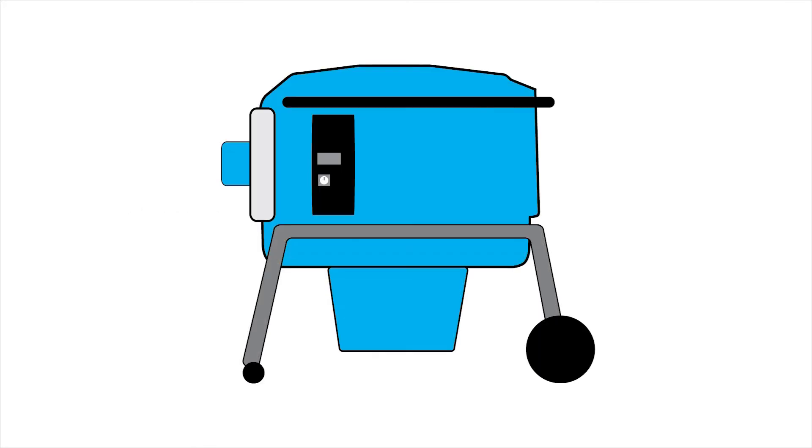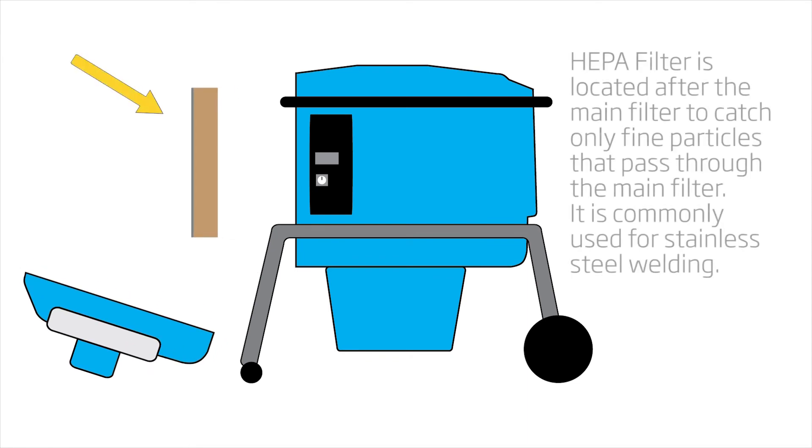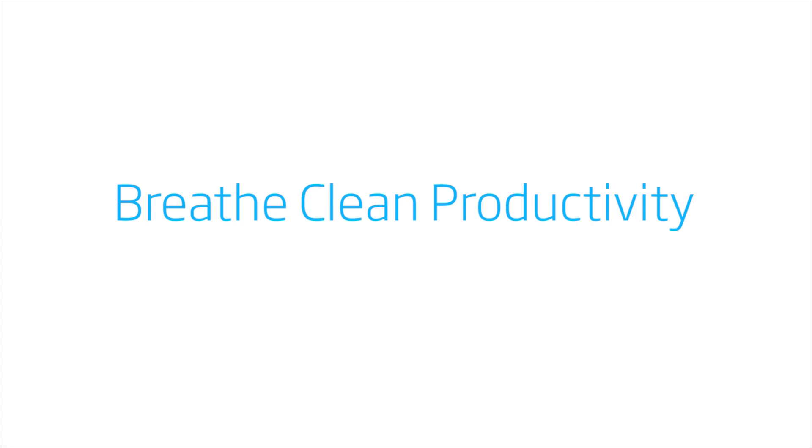The filter box has an optional secondary filter that only catches fine dust that passes through the main filter. HEPA filters tend to cost more than standard filters. This ensures maximum life from the HEPA filter. This is one of the ways the filter box helps you breathe clean productivity.